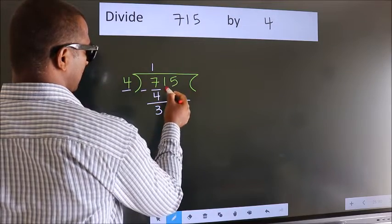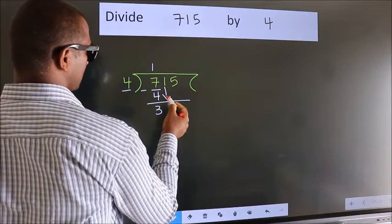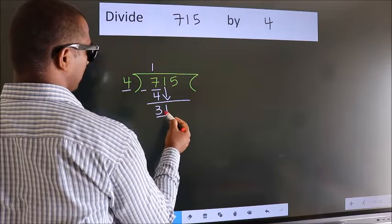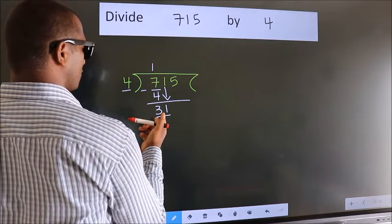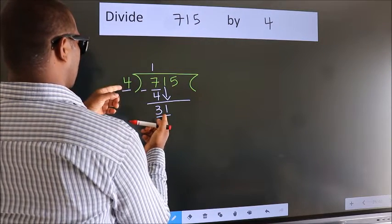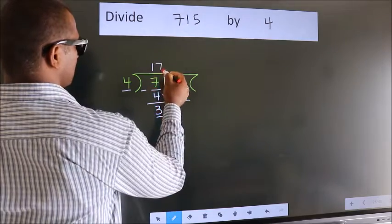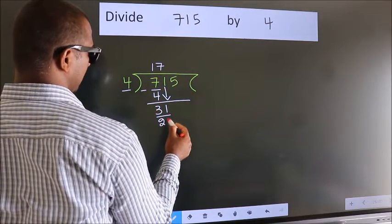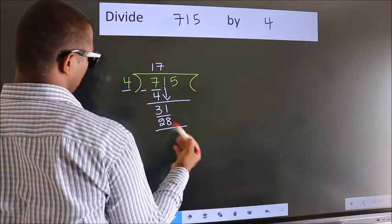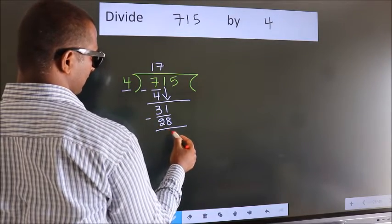After this, bring down the beside number. So 1 down. So 31. A number close to 31 in 4 table is 4 sevens, 28. Now we subtract. We get 3.